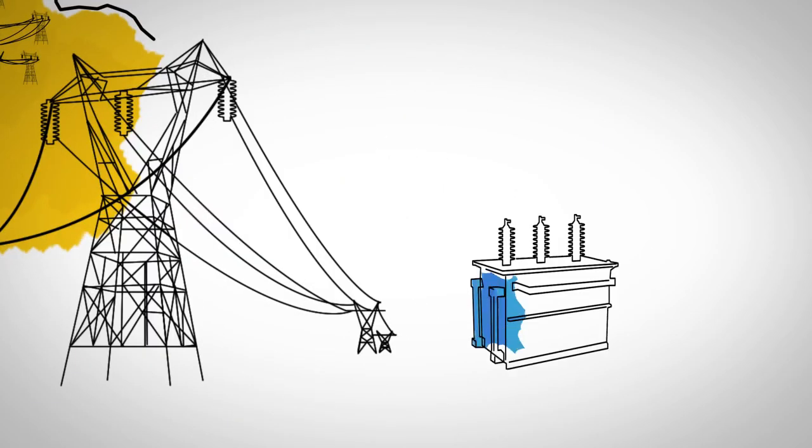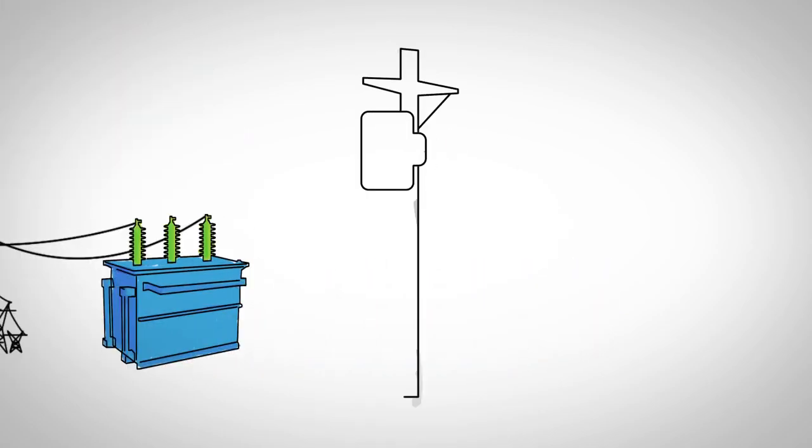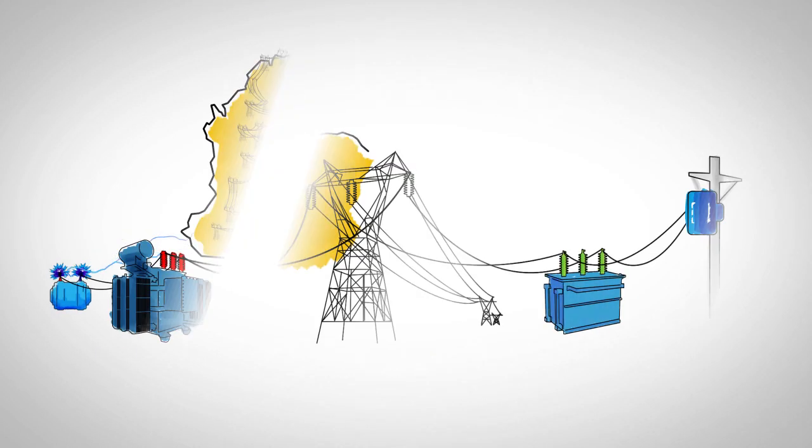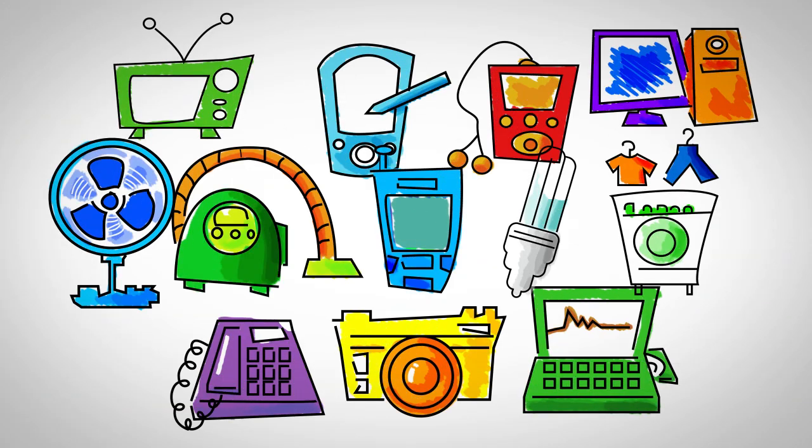Before it gets to you, the electricity passes through step-down transformers to reduce voltage, which is very high while the electricity is transmitted over long distances. And this is how the energy we generate powers this screen and the machines we use every day.